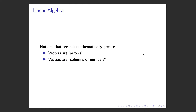In summary, linear algebra is a tool that is used in quantum mechanics, and the bracket notation is a neat way to represent ideas of linear algebra. Namely, the ket represents a vector in the Hilbert space, and the bra represents a linear functional in the Hilbert space.